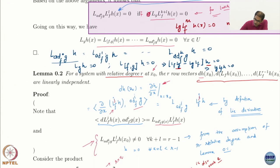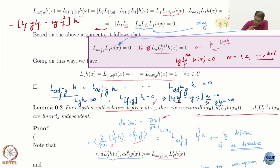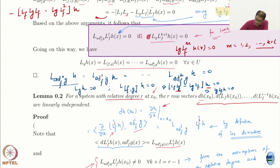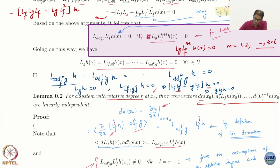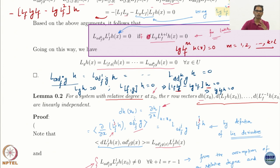Then we have another lemma based on this one, which says that if the system has relative degree r — and to be specific, relative degree r at some state x₀, though it is better if the relative degree holds in a set — then feedback linearization at only one point is not going to help you in control.